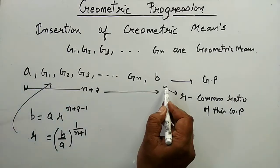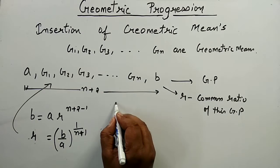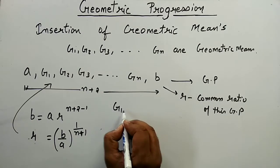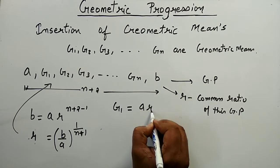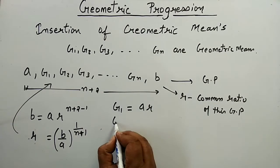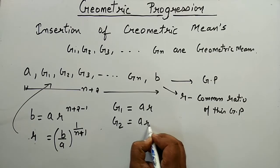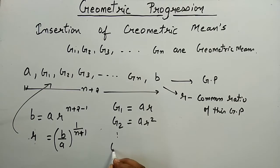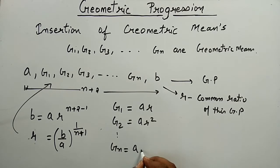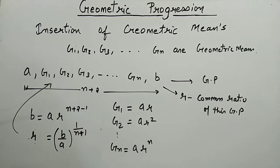Now, g1 equals ar, g2 equals ar squared, and gn equals a times r to the power n.